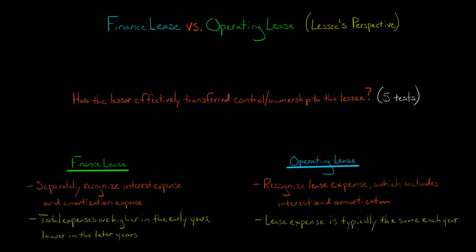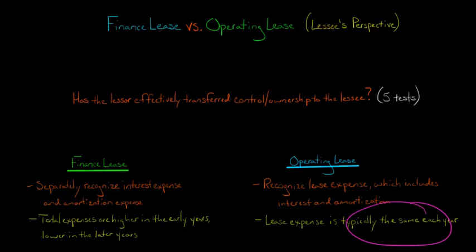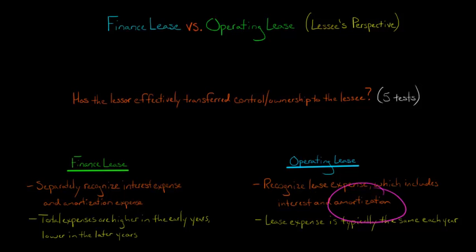There is an accounting difference: with a finance lease we have separate interest expense and amortization, while with an operating lease they're lumped together as lease expense. The amounts can also be different. If you add interest expense and amortization expense for a finance lease in a given period, it's very likely to differ from the operating lease expense, because the operating lease expense is typically the same amount each year. Interest gets lower each year as the lease liability decreases, but the amortization is set up as a plug so that the lease expense stays the same every year.